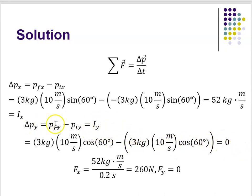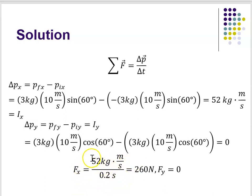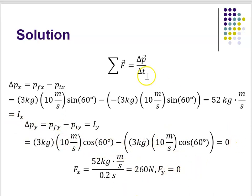So my delta p equals F average times delta t. I can use that equation to solve for the average force experienced by the ball during the collision. F equals delta p over delta t — that's 52 kilogram meters per second divided by 0.2 seconds, which gives me 260 newtons. The y component of my force would be zero, because there's no change in my momentum in the y direction. That's how to use impulse in a problem. I hope you understood that — please ask me questions and I'll see you in class.